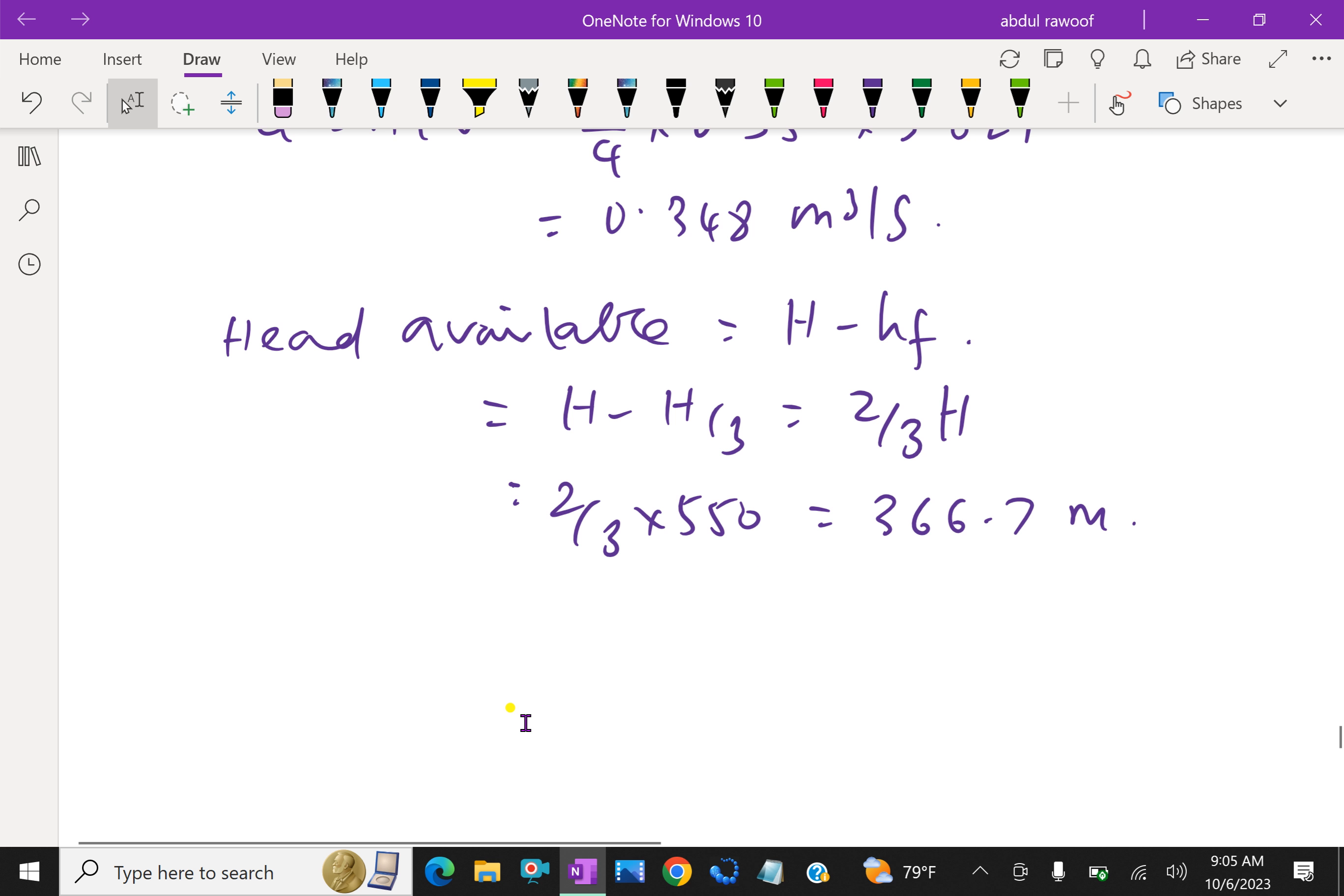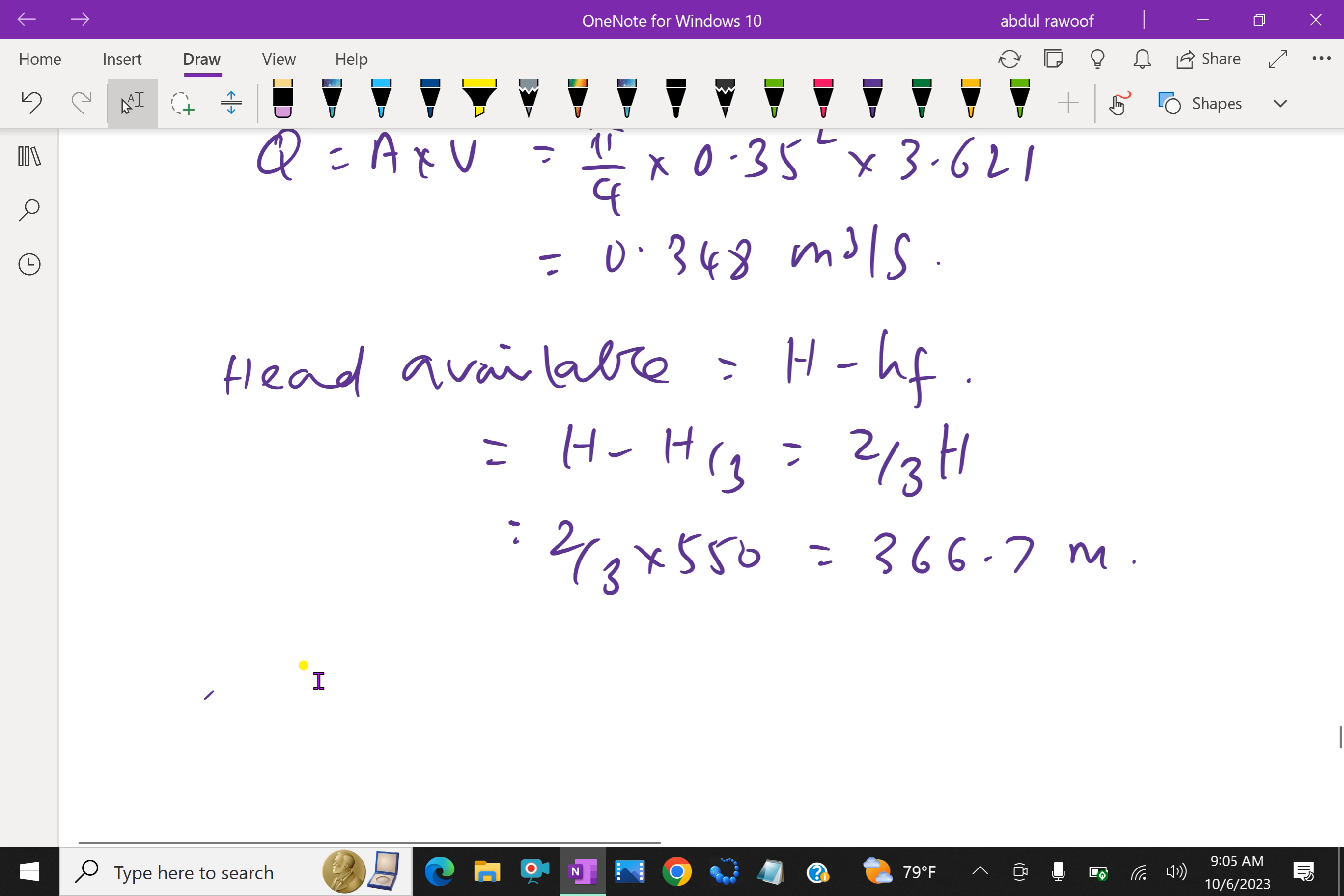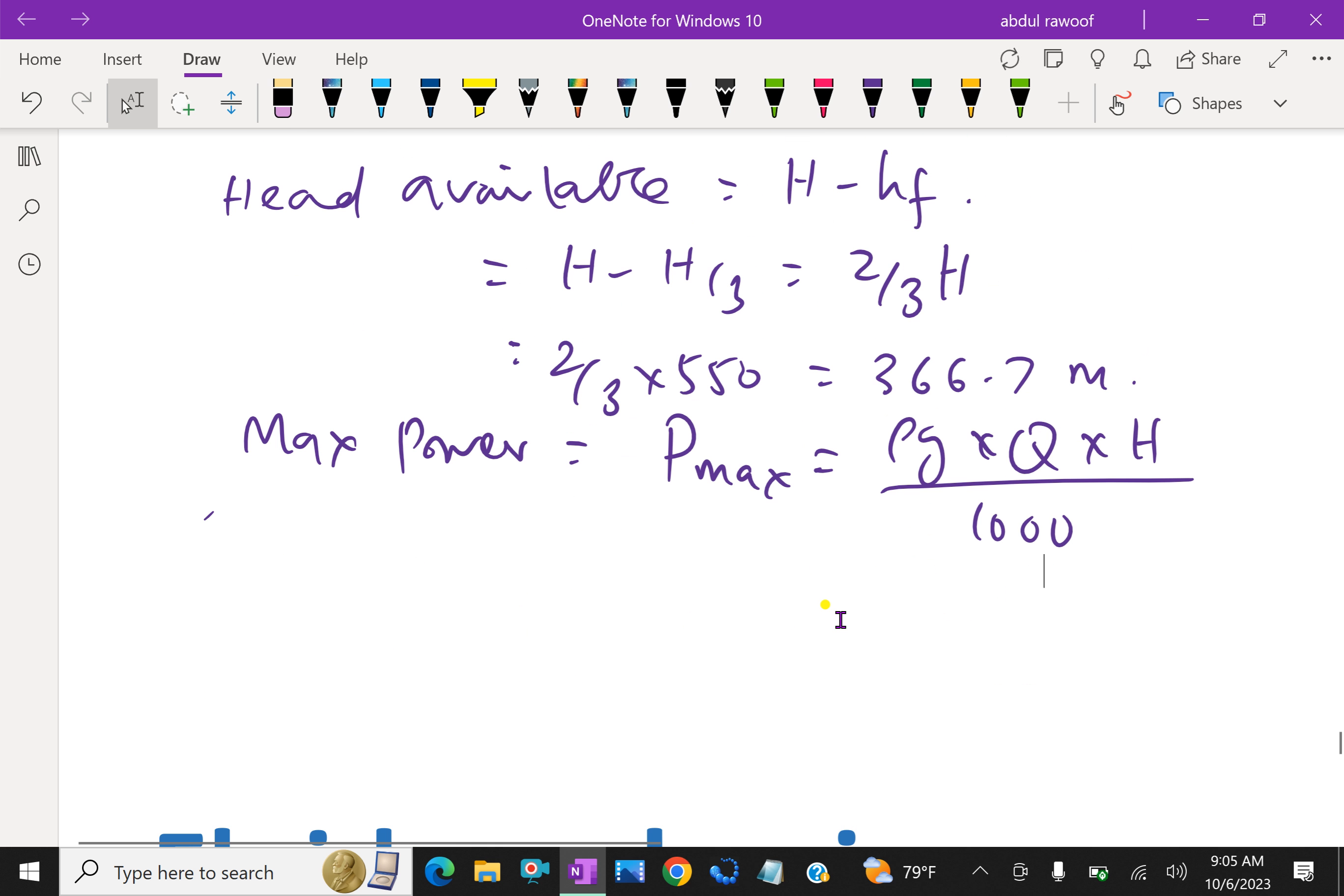Maximum power P max equals ρ g into Q into H available. H available is 366.7 meter.